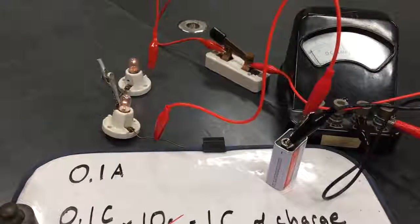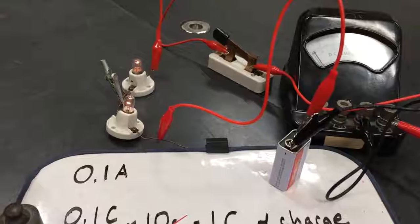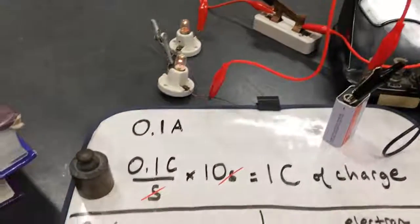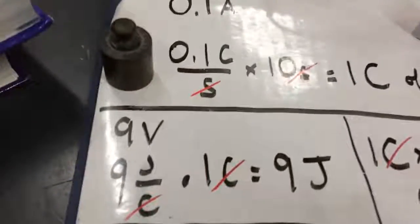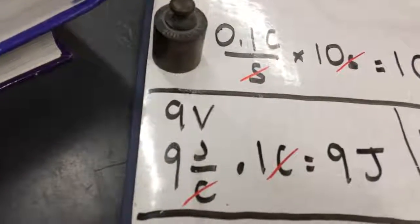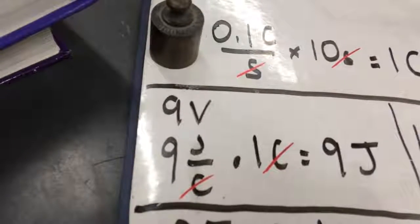I did one other calculation to try to put the amount of energy we used in those 10 seconds in perspective. I recognize this is a 9-volt battery, which means each coulomb got 9 joules. Since we had 1 coulomb, we got 9 joules total.